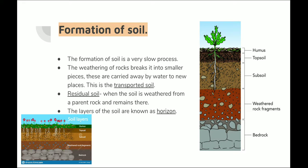These smaller pieces are carried away by water to a new place — this is called transported soil. For example, in a mountain area, when rock breaks into smaller pieces and a river brings them to a plain area, that soil is known as transported soil — it has been transferred from one place to another. Residual soil is when rock weathers into smaller particles but the water does not carry those particles away, so they remain in place.